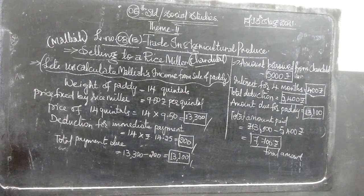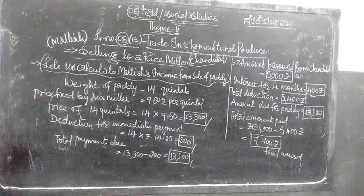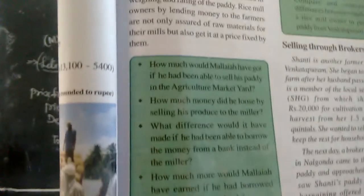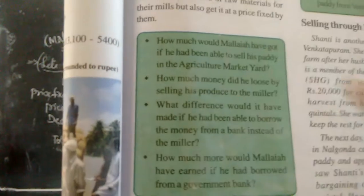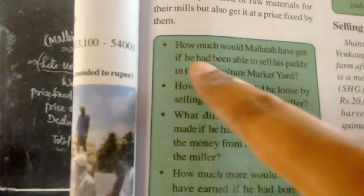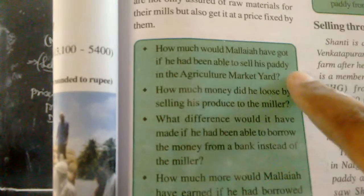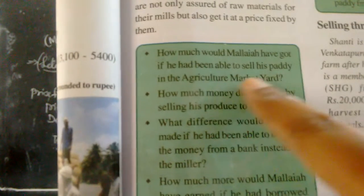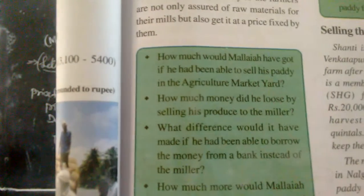Now we will look at the inbox questions on page 77, related to the topic of selling to a rice miller. The first question: how much would Malaya have got if he had been able to sell his paddy in the agricultural market?